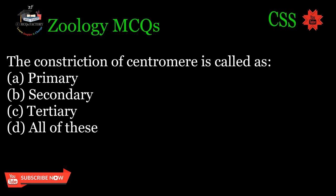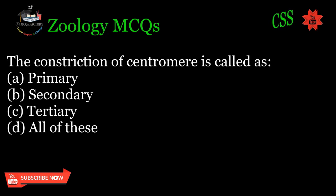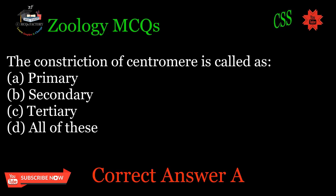The constriction of centromere is called as: A. Primary, B. Secondary, C. Tertiary, D. All of these. Correct answer: A.